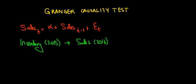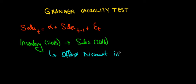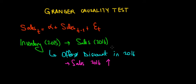Well, if we have clothes in stock that we did not sell in 2015, what we could do is offer those clothes on discount in 2016 and get rid of that inventory. That would increase sales in 2016. We want to see if that effect is consistent across time — can we say that inventory in the previous period affects sales in the current period?